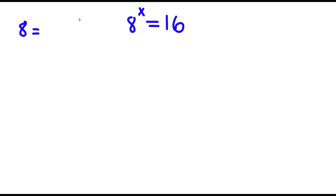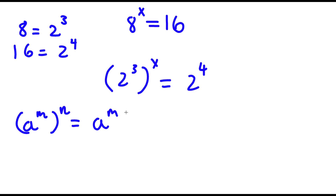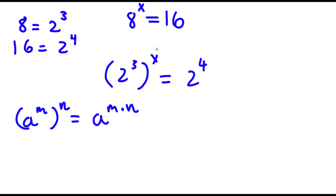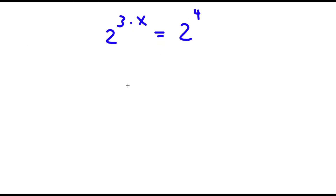Well, 8 is the same thing as 2 to the power of 3, and 16 is the same thing as 2 to the power of 4. So if I replace 8 with 2 to the power of 3, and 16 with 2 to the power of 4, I get 2 to the power of 3 to the power of x is equal to 2 to the power of 4. Now, a to the power of m to the power of n equals a to the power of m times n. So 2 to the 3 to the power of x equals 2 to the power of 3x, which is equal to 2 to the power of 4.